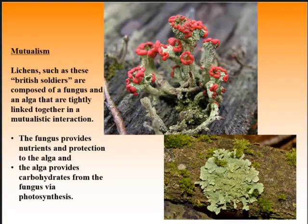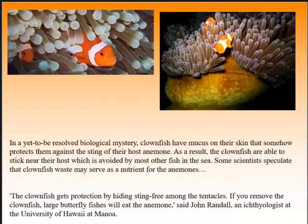Mutualism is also shown with lichens, which you can probably see on rocks and on trees. Lichens are actually fungus and algae that have a mutualistic relationship — the fungus provides nutrients and protection, and the algae provides carbohydrates from photosynthesis in the form of glucose. They both benefit.